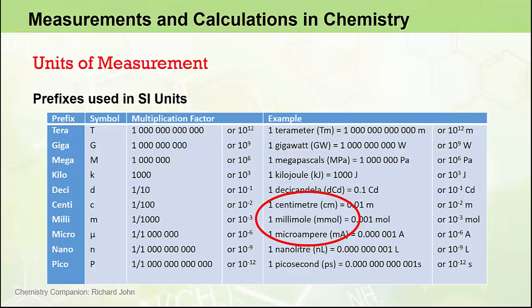These prefixes can appear in front of the base units from the table we saw a little earlier, such as centimeter, millimole, microampere. Or, they can appear in front of so-called derived units, such as gigawatt, megapascal, and kilojoule.